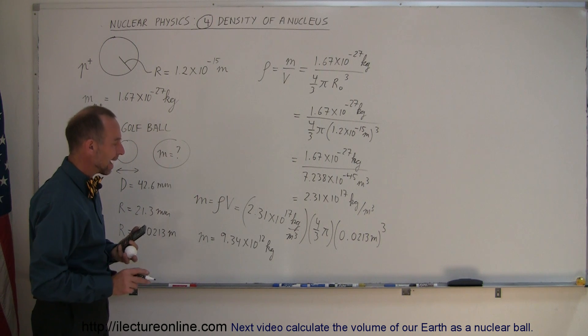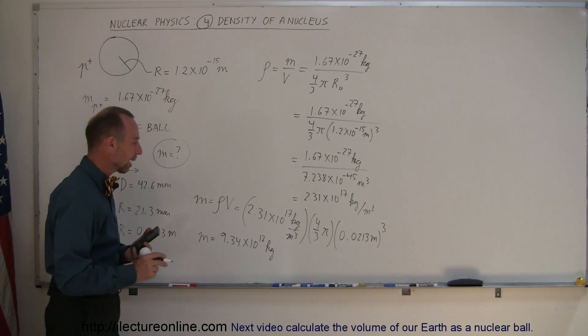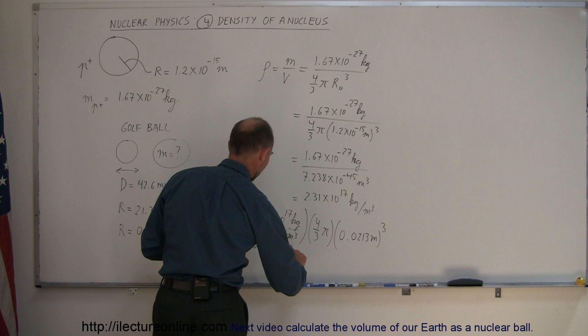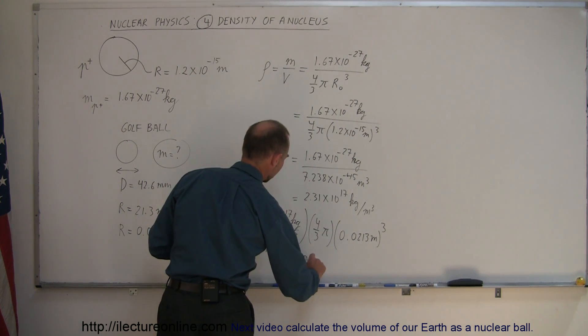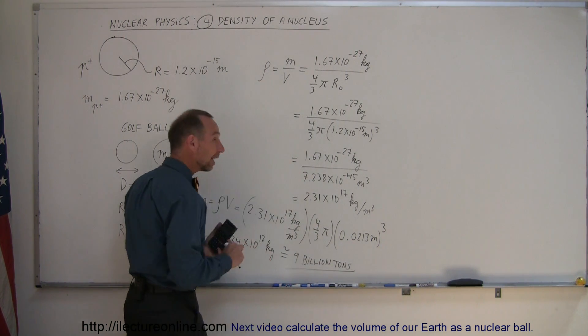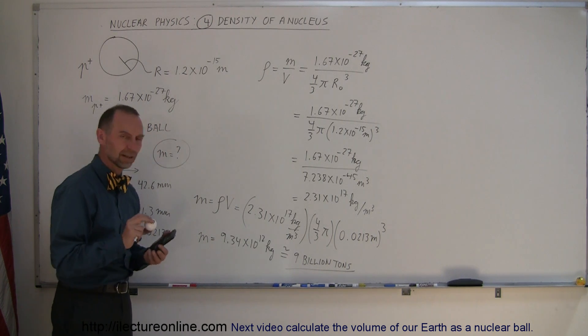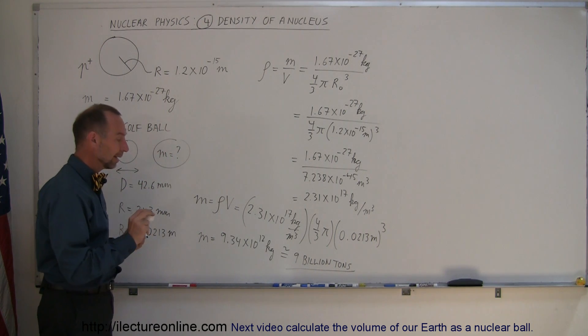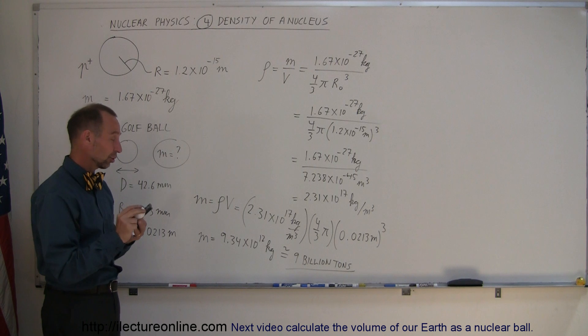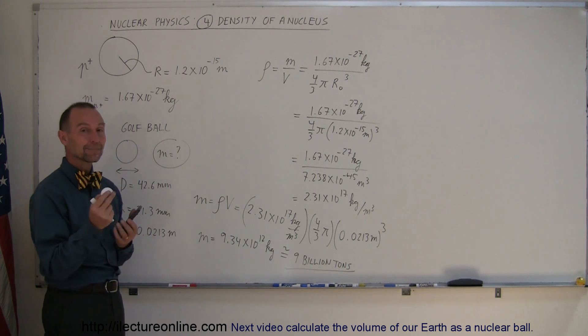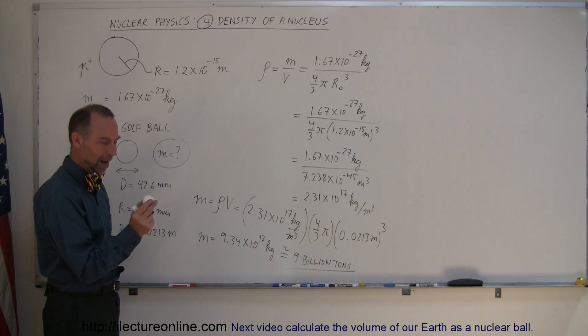and the mass would equal 9.34 times 10 to the 12th kilograms. That would be 9 trillion kilograms, or about 9 billion tons. Imagine that. If this golf ball was made out of nuclear material, its mass would be 9 billion tons. Wow,